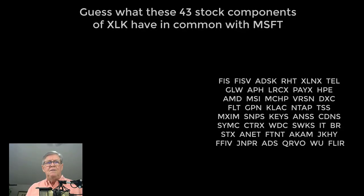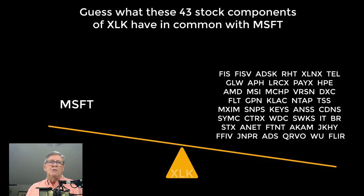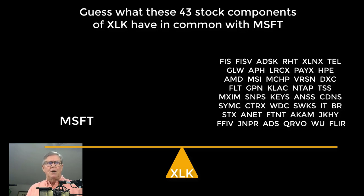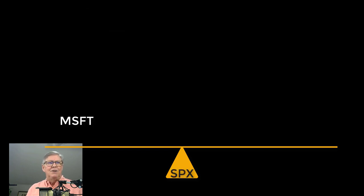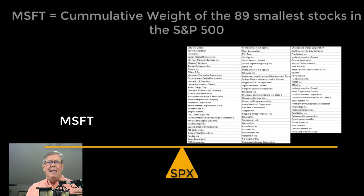Look at the weight of Microsoft on the index — it carries the same amount of weight as the 43 smallest members. For example, Microsoft could go up 1% in a trading session while the other 43 stocks all go down 1%, and the index would remain the same. Using Microsoft, we can cloak what we are doing in those other 43 stocks. Carrying this further, Microsoft has the same weight in the S&P 500 as the cumulative weight of the 89 smallest components of the S&P 500.